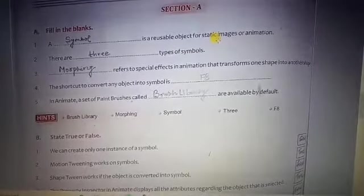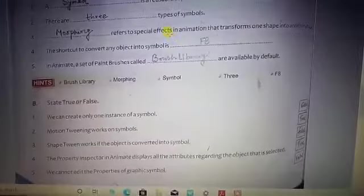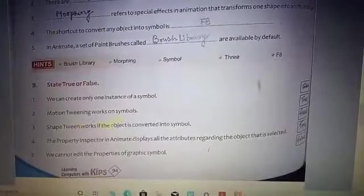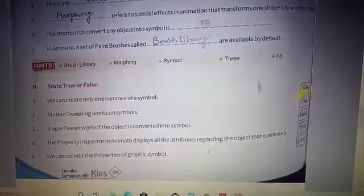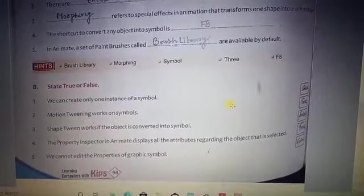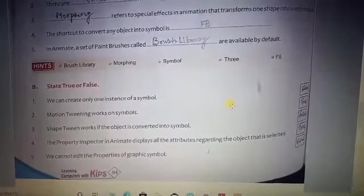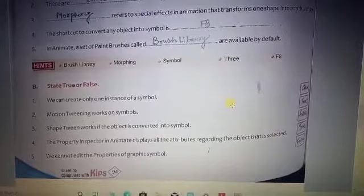Now come to the True or False. We can create only one instance of a symbol. That is false. We can create multiple instances of the symbols at a time. Motion tween works on a symbol. That's true.